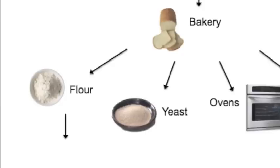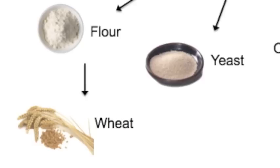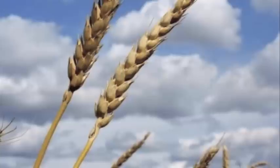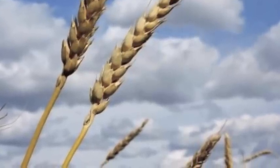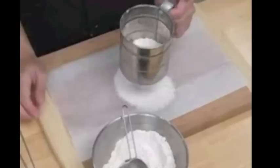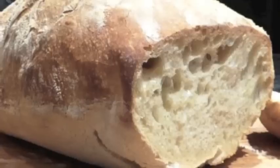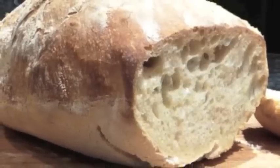First, let's talk about how flour is made. To make flour, wheat is a required ingredient. Wheat is a raw material and is part of the primary industry. The wheat is then grounded in a flour mill to make flour. Flour is part of the secondary industry. And finally, it is used to make bread.